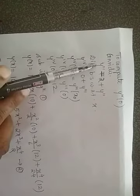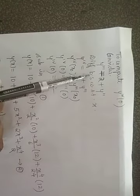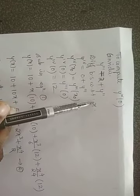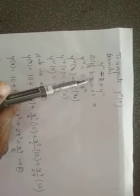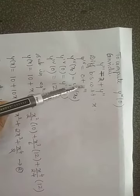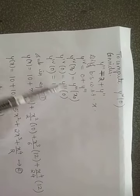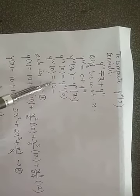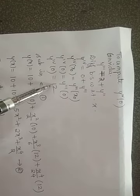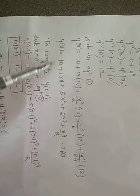To compute y⁴(0): differentiate y''' = 2 + y'' with respect to x. The derivative of y''' is y⁴, derivative of 2 is 0, and derivative of y'' is y'''. So y⁴(x₀) = y'''(x₀), meaning y⁴(0) = y'''(0) = 12.